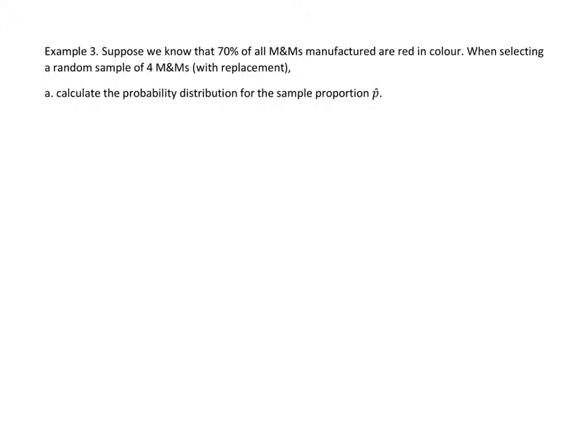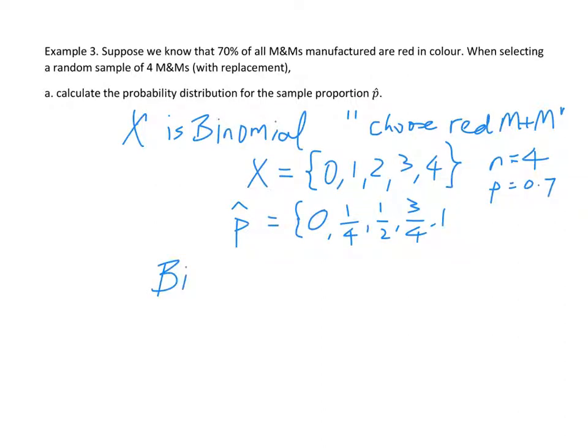So you would just have to set up a probability distribution based on the binomial formula, where you have nCx, p to the power of x, 1 minus p to the power of n minus x. And so if you actually use your calculator, you can use it to find your binomial pdf.